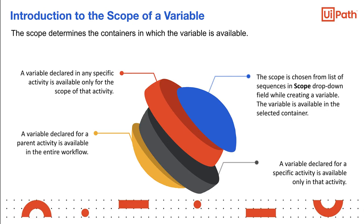If a variable is declared for a parent activity, then the variable is available in the entire workflow. However, if the variable is declared in any specific activity, then it is available only for the scope of that activity. The scope of a variable cannot exceed the workflow in which it was defined. The scope of each variable should be defined correctly. The variables should be defined only in the scope in which they are used. Making multiple variables unnecessarily available for the entire workflow can cause efficiency issues as well as possibility for confusion.